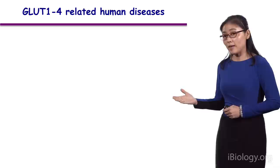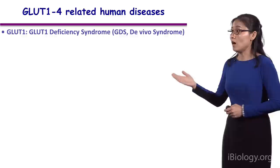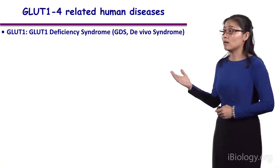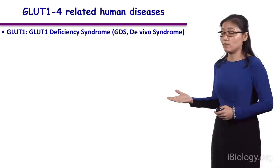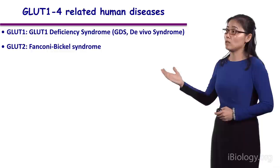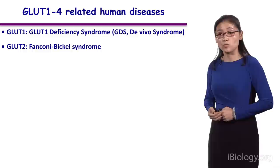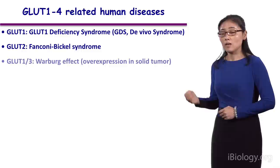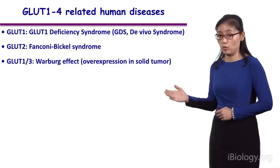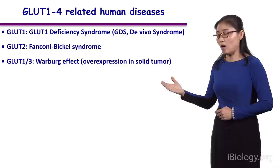Because of their fundamental significance in physiology, you can imagine malfunction or misregulation of these proteins is associated with various diseases. For example, GLUT1 deficiency syndrome is actually a rare genetic disease manifested by early-onset seizure or retarded development. And because GLUT2 is associated with the liver, mutation of GLUT2 is associated with a type of disease called Fanconi-Bickel syndrome. And more and more evidence shows that GLUT1 and GLUT3 are overexpressed in cancer cells, especially solid tumor cells, because of the so-called Warburg effect.